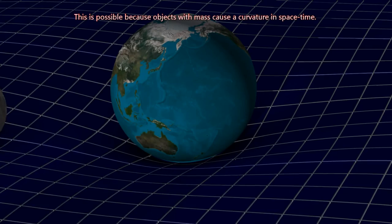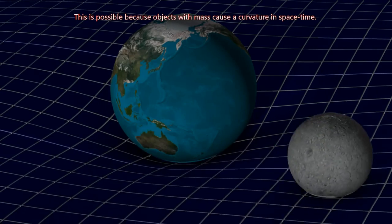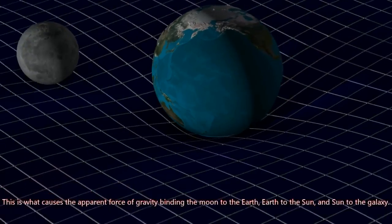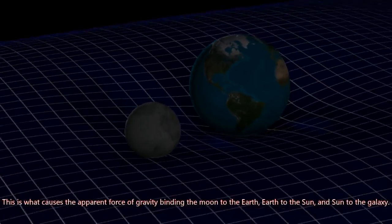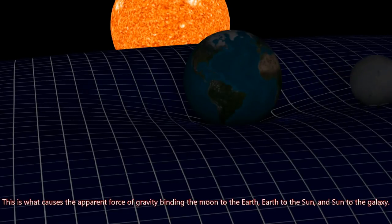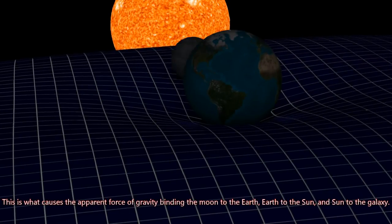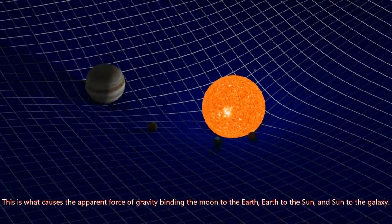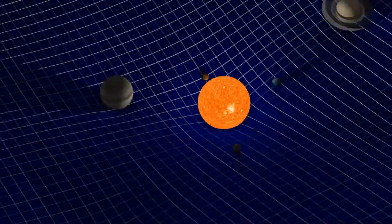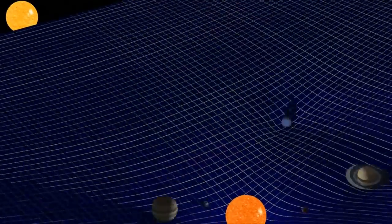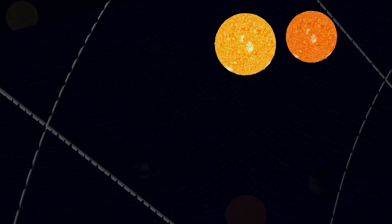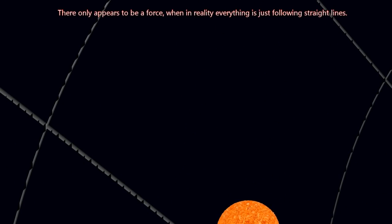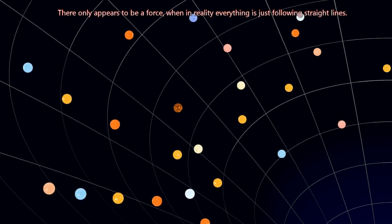This is possible because objects with mass cause a curvature in space-time. This is what causes the apparent force of gravity binding the Moon to the Earth, Earth to the Sun, and Sun to the Galaxy. There only appears to be a force, when in reality everything is just following straight lines.